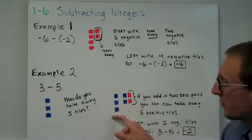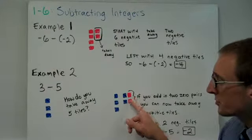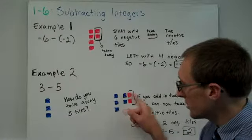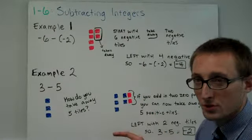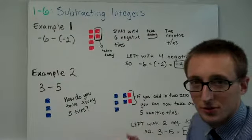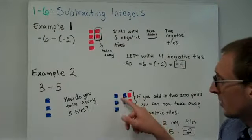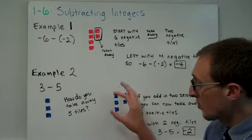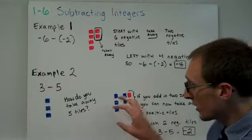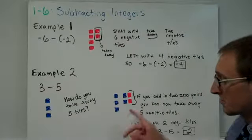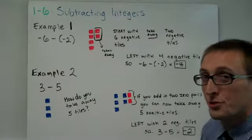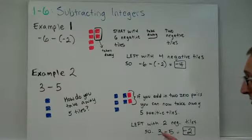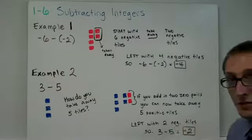So here are my 3 positive tiles right here, and if I bring in 2 zero pairs, it doesn't change anything. Remember, the value of each pair is 0, so it's kind of like saying 3 plus 0 plus 0. It's still 3. So I bring in these 0 pairs, and now I can take away 5 blue tiles. However, when I take away 5 of the blue tiles, guess what we're left with? The 2 negative ones that we brought in from the 0 pairs. So our answer is 3 minus 5 is negative 2.